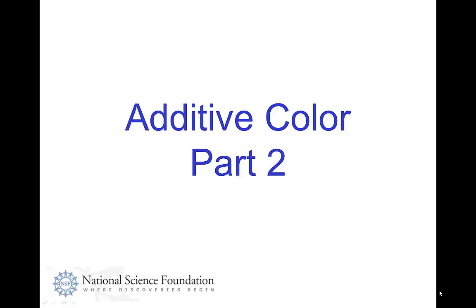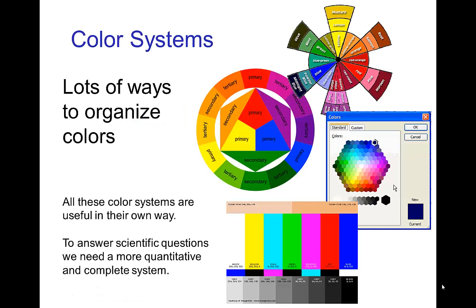Additive color, part two. Now, there's lots of ways of organizing color in different types of color maps or systems. Very common ones are color wheels, and each of these has its own utility, but we want to have some type of scientific way of organizing color that helps us make predictions about color.